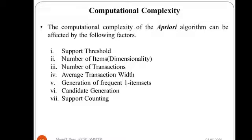Good day students. In this video lecture we will be seeing the computational complexity of the Apriori algorithm, which is affected by various factors. Some of the factors are: support threshold, number of items (dimensionality or number of features), number of transactions, average transaction width, generation of frequent one-item sets, candidate generation, and support counting. Let us go through each one of them one by one.